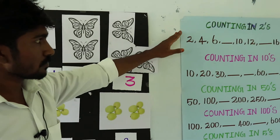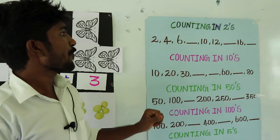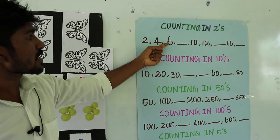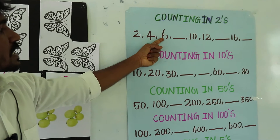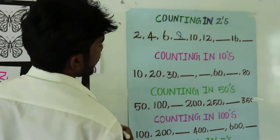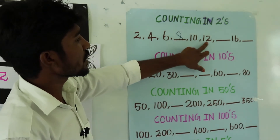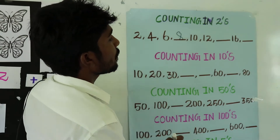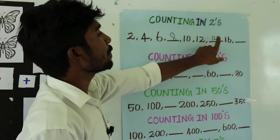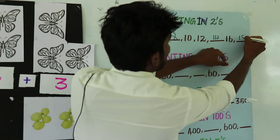Then last one, counting in twos. First one: 2 plus 2 is equal to 4, 4 plus 2 is equal to 6, 6 plus 2 is equal to 8. Then 8 plus 2 is equal to 10, 10 plus 2 is equal to 12, 12 plus 2 is equal to 14, 14 plus 2 is equal to 16, 16 plus 2 is equal to 18.